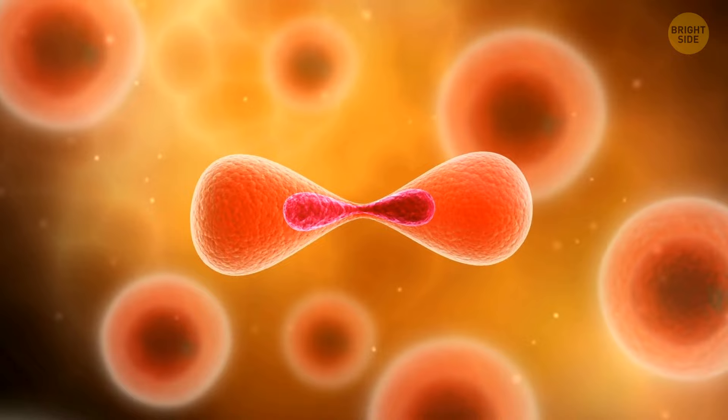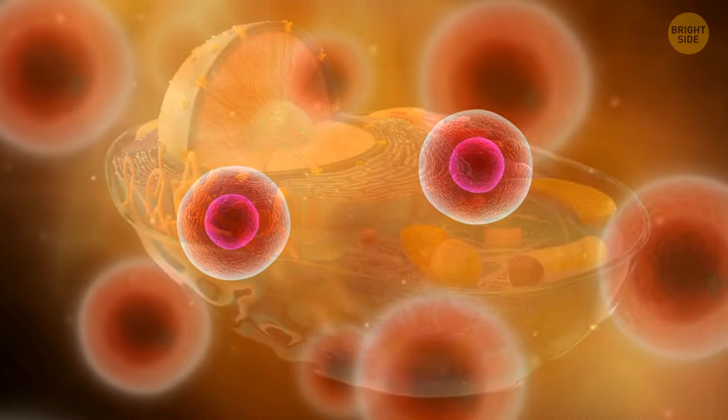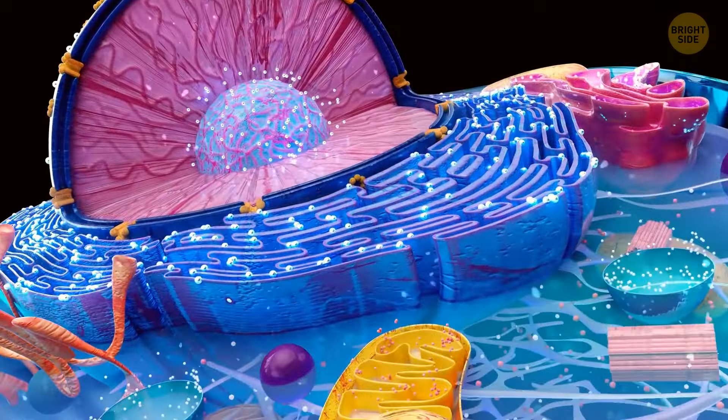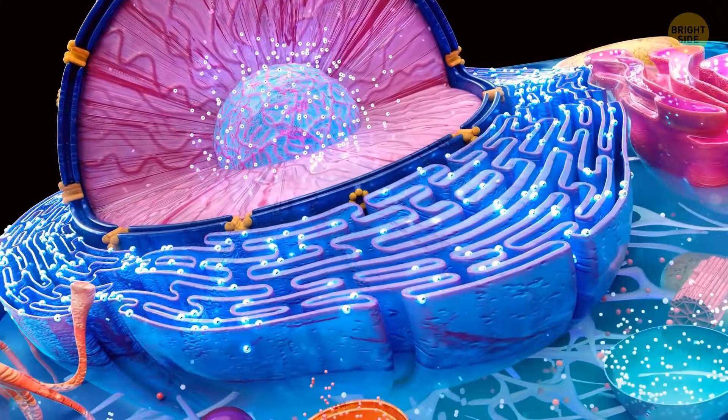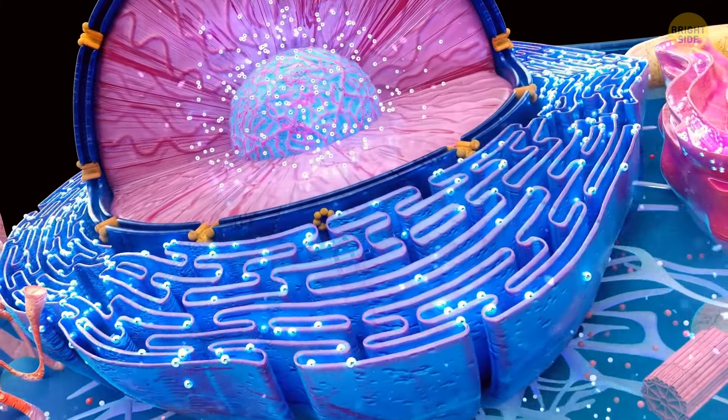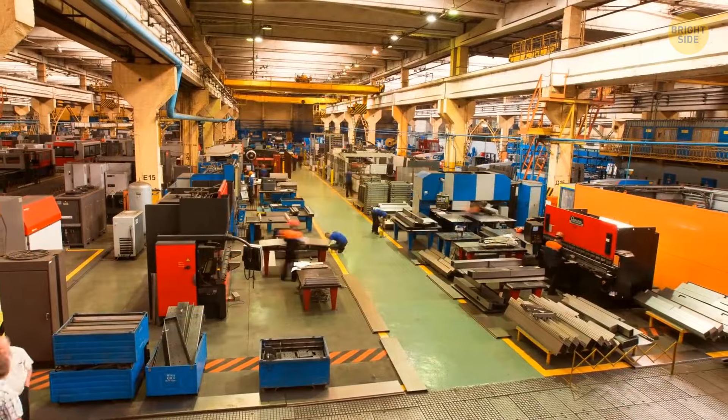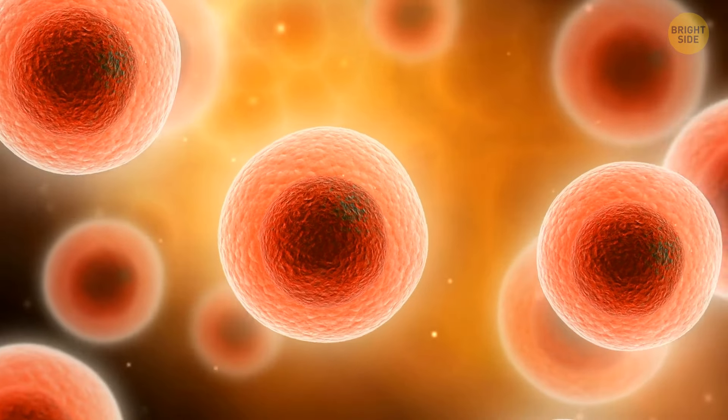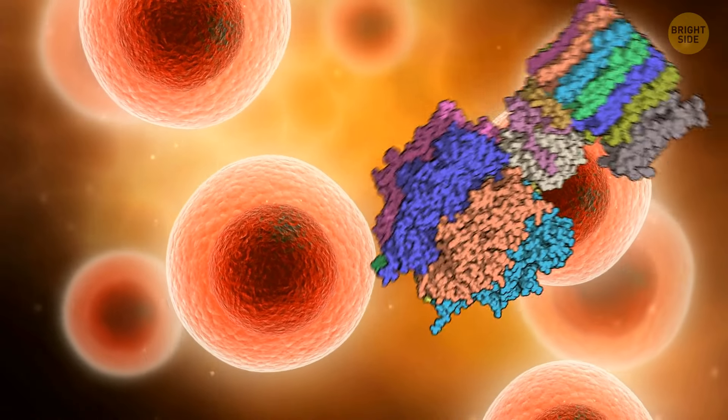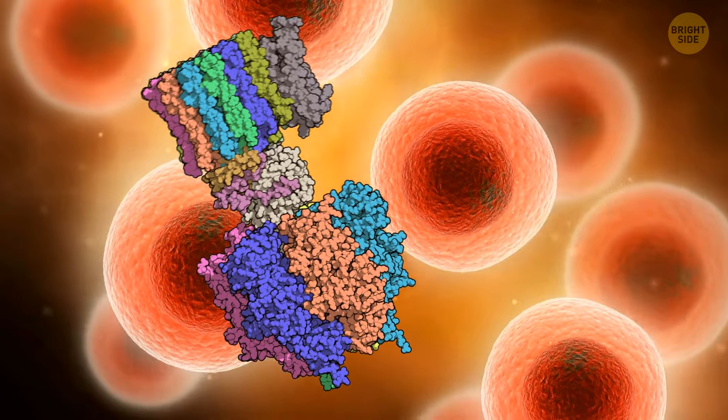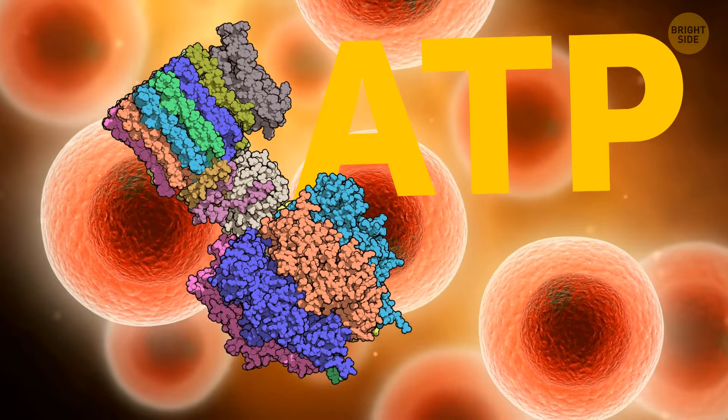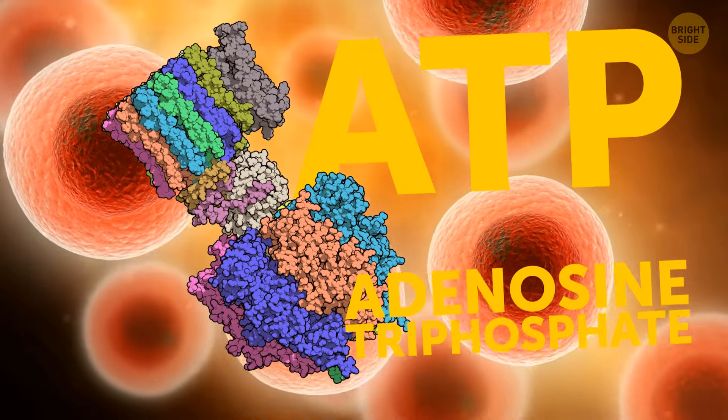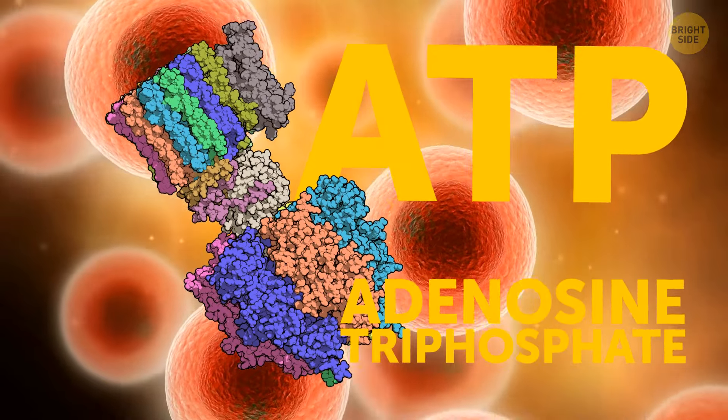Cells are the building blocks of life. You can picture these cells as tiny factories bustling with activity, constantly working to keep you alive. Just like every factory needs a power source to keep its machines running smoothly, they need energy to do their job. In the world of cells, that power source is something called ATP, which stands for adenosine triphosphate. It's an organic molecule.